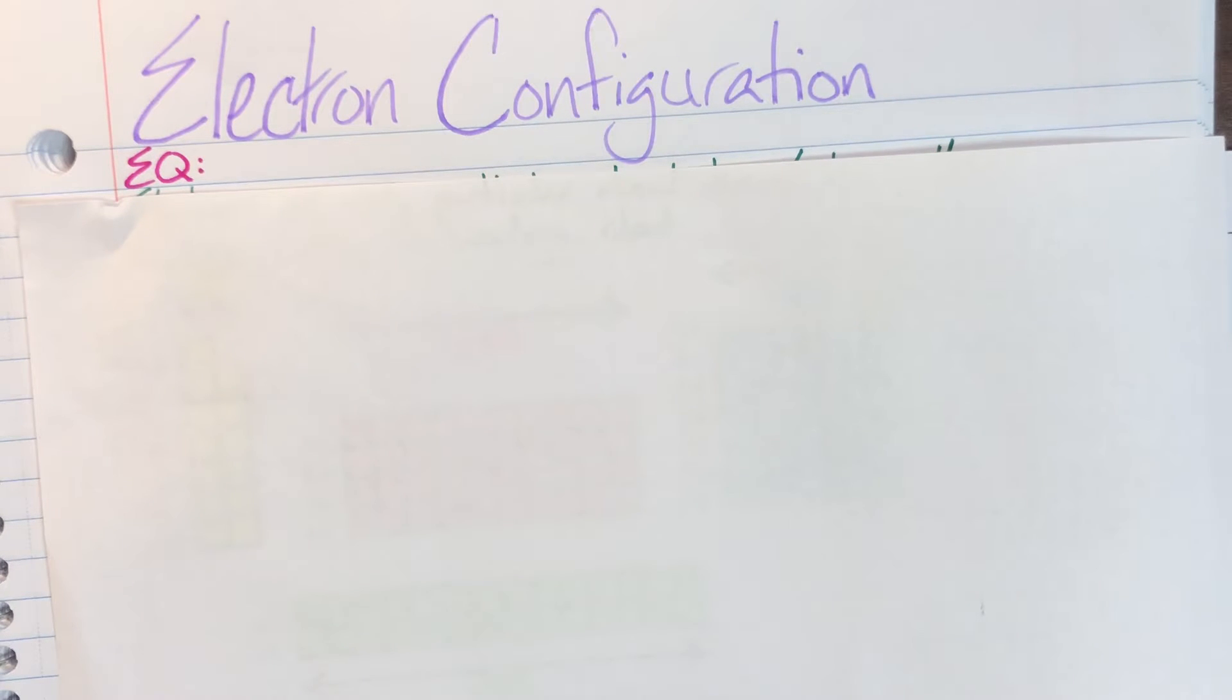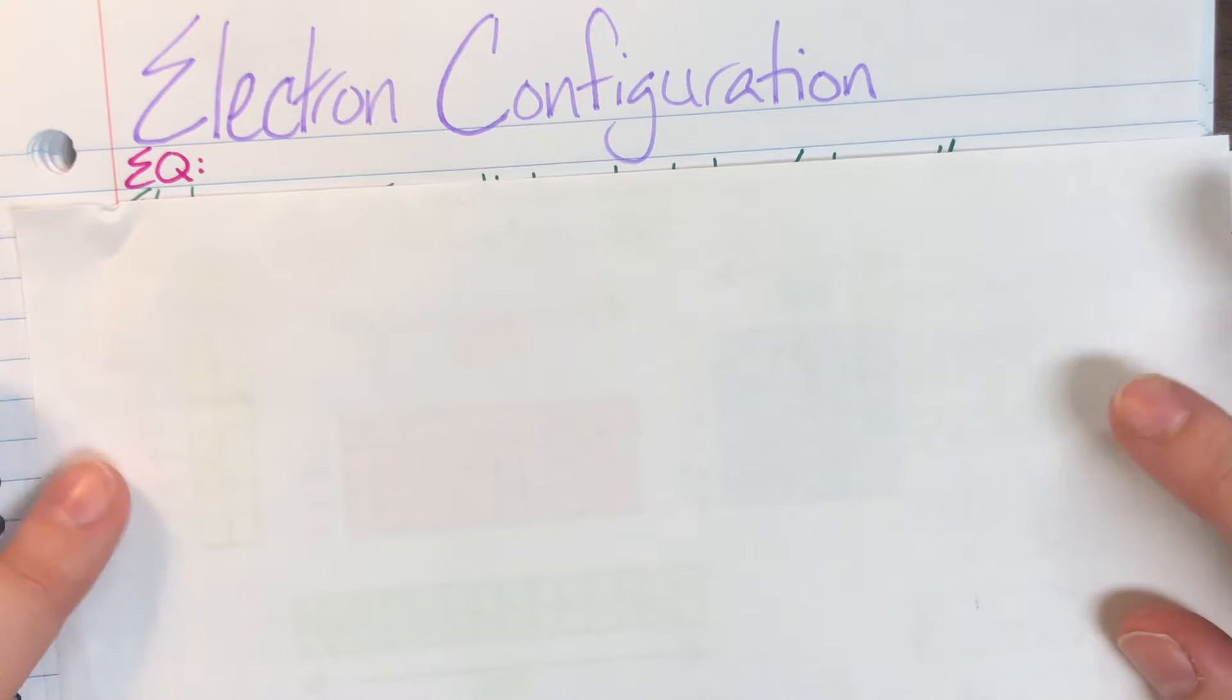Today we're going to be talking about electron configurations and as always we're going to start off with that essential question. Our TEC is students will be able to explain the purpose of and write electron configurations. Go ahead and turn that statement into a question and then we're going to get started.